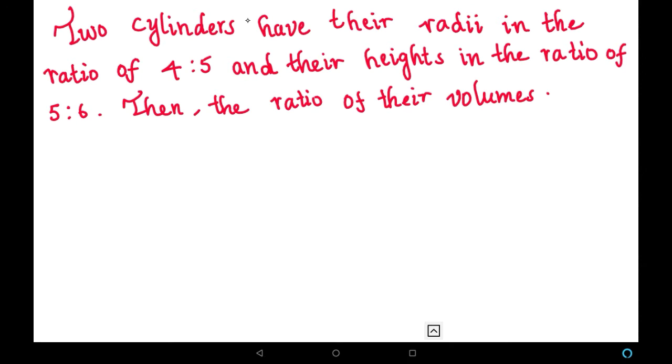So two cylinders are there whose radii are in the ratio of 4 is to 5 and their heights are in the ratio of 5 is to 6. Then we have to find the ratio of their volumes. First, let us write the given values.